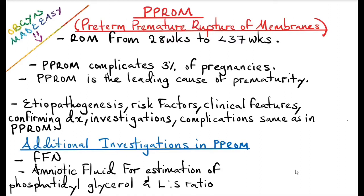Welcome back to the channel, OBS and Guide Made Easy. Today I'll be discussing PPROM. PPROM is preterm premature rupture of membranes, from 28 weeks gestational age to less than 37 weeks gestational age. It occurs before the pregnancy reaches term. PPROM complicates 3% of pregnancies and is the leading cause of prematurity. The pathogenesis, risk factors, clinical features, diagnosis, investigations, and complications are the same as in PROM.